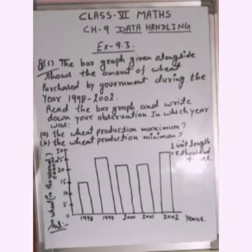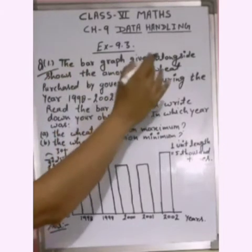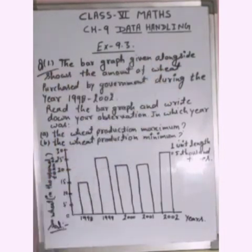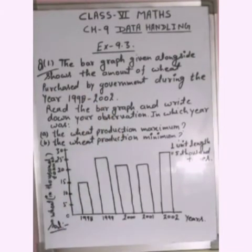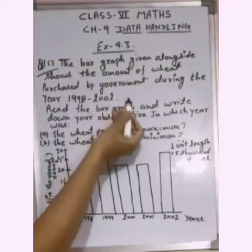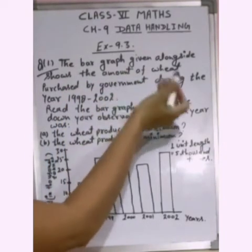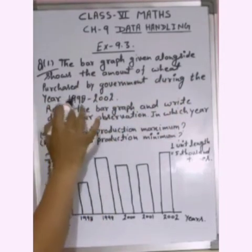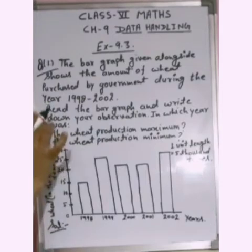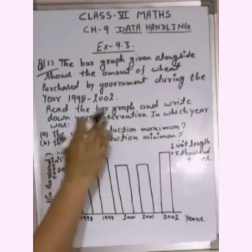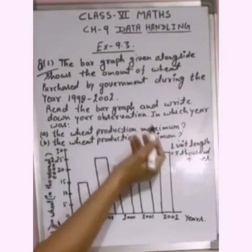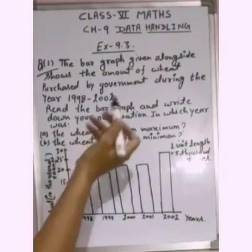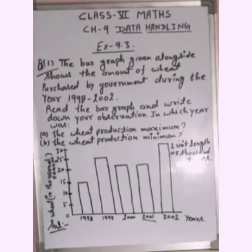Question number 1 of Exercise 9.3 is: The bar graph given alongside shows the amount of wheat purchased by government during the years 1998 to 2002. We have to read this bar graph and write down our observations — specifically, in which year was the wheat production maximum?